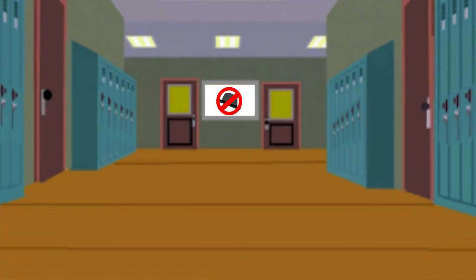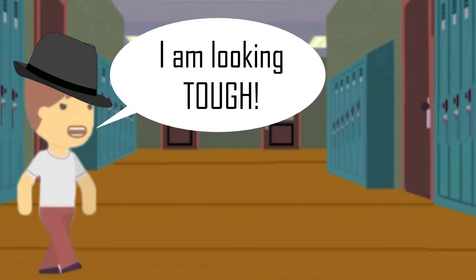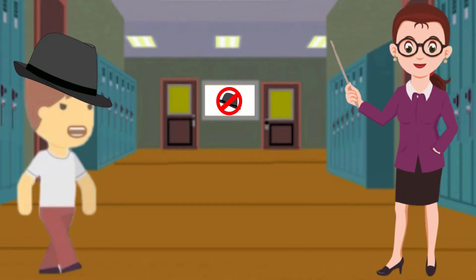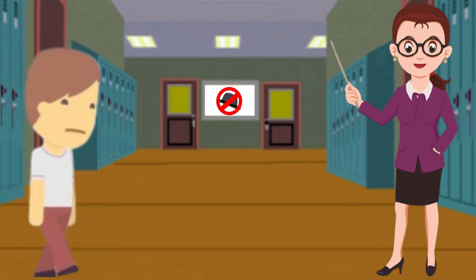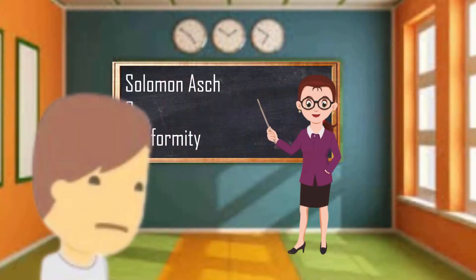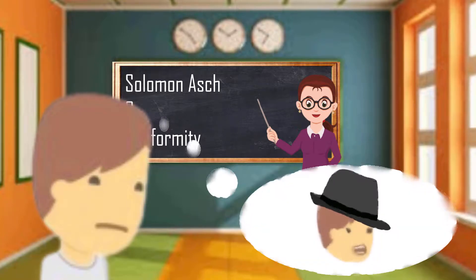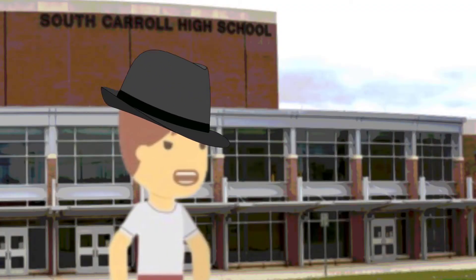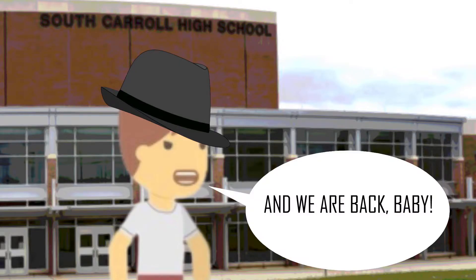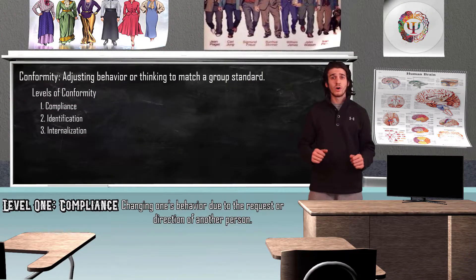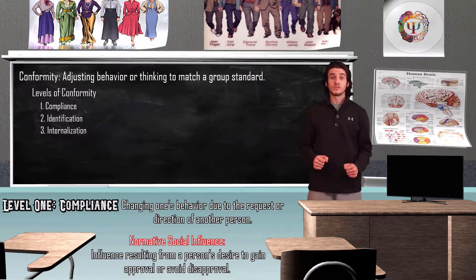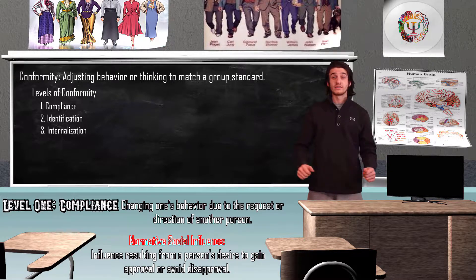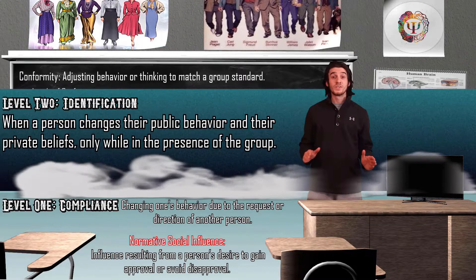Let's say your school has a no-hat policy but you decide to wear one anyway. When you get to school, a teacher asks you to take the hat off — in an act of conformity, you take the hat off even though you'd much rather keep it on. Once you leave the building, you put your hat right back on. Complying with this rule is a short-term change, often the result of what social psychologists call normative social influence, which are influences that result in our desire to gain approval or avoid disapproval.